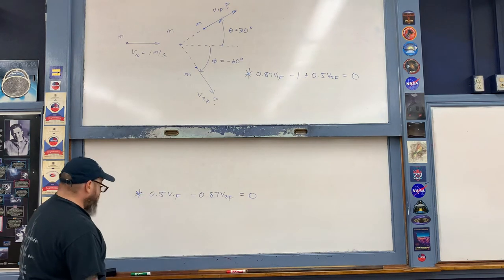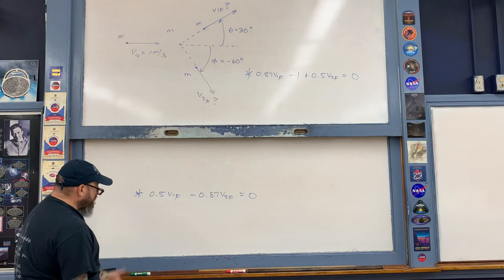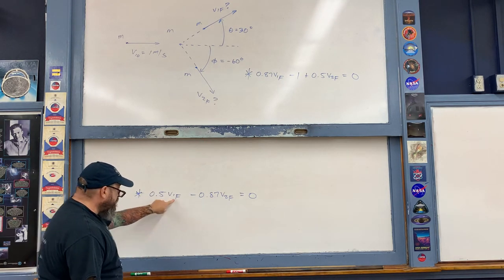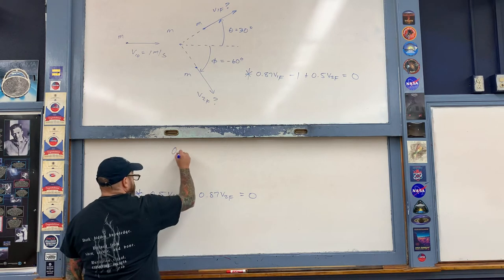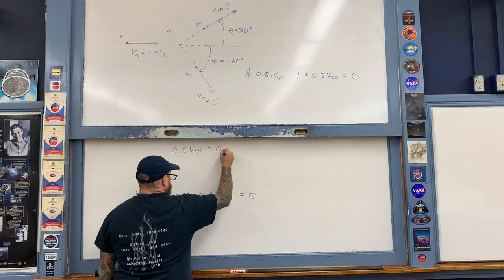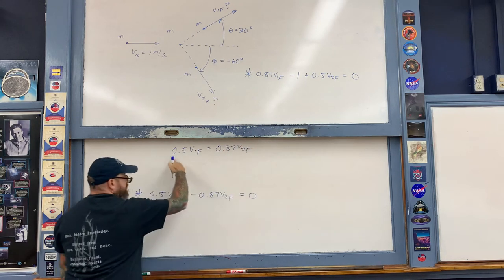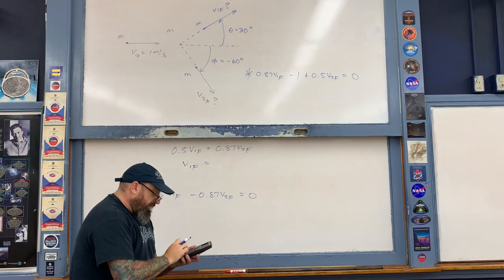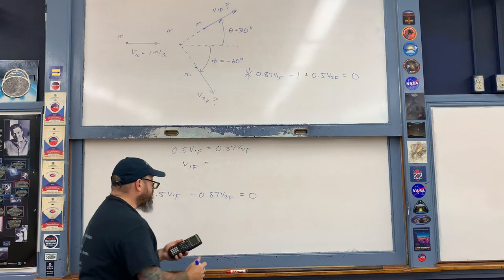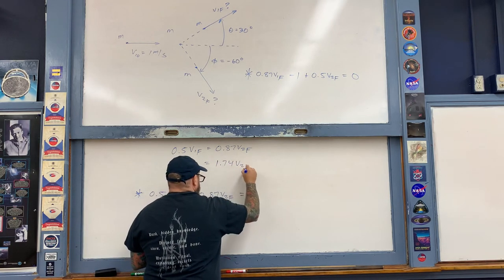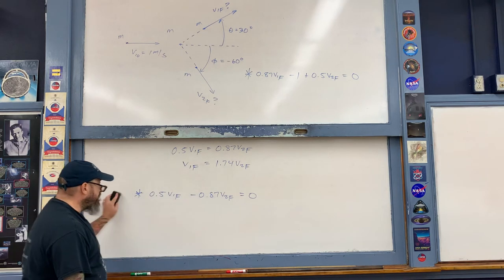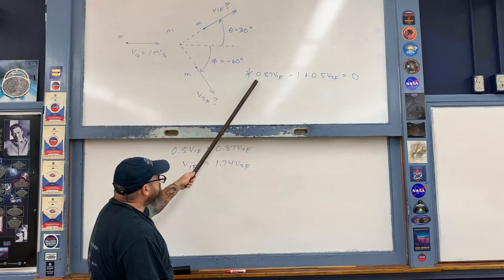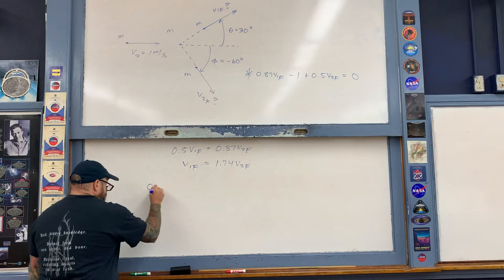To complete the math, I'll solve for one unknown and substitute. From the y-direction equation, solving for v1_final: move the v2_final term to the other side and divide by 0.5. That gives v1_final = (0.87 / 0.5)·v2_final = 1.74·v2_final.